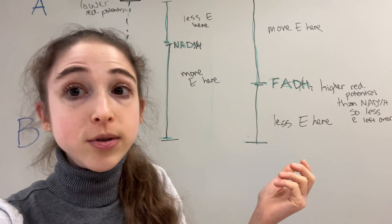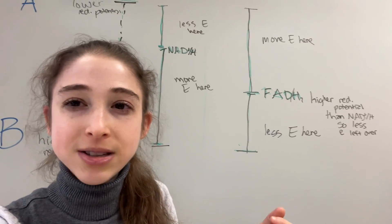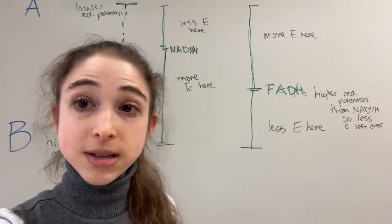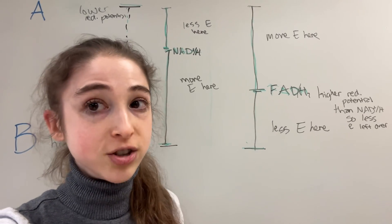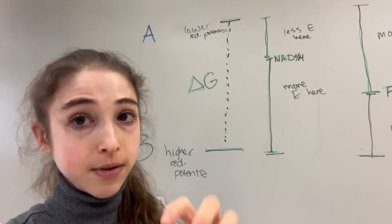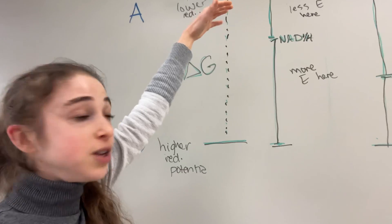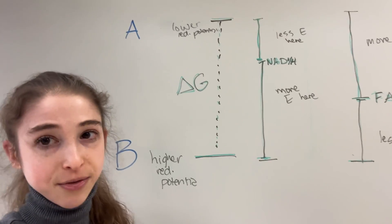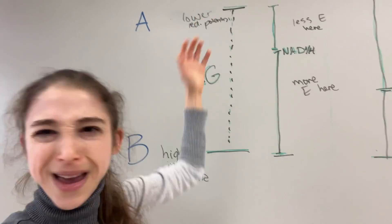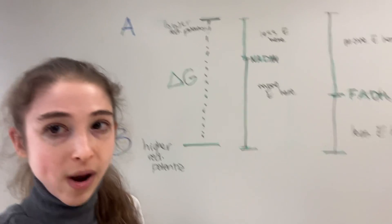Similar principles hold no matter what sorts of chains you're talking about. The bigger the gap between molecules in terms of their reduction potentials, the more energy you're going to get in that pass-off. But overall, you would have the same total energy difference starting from A and ending at B — you can just split things up in different ways.